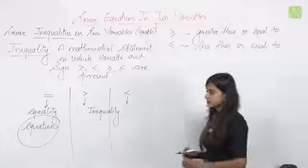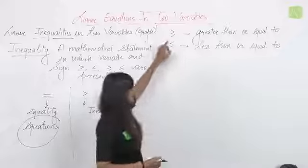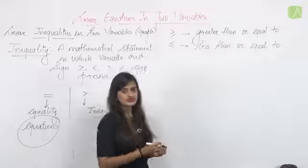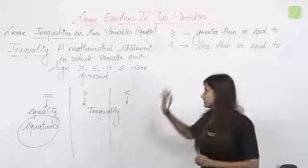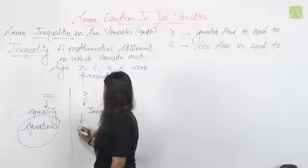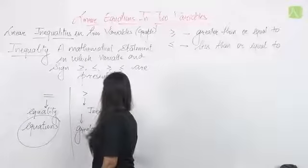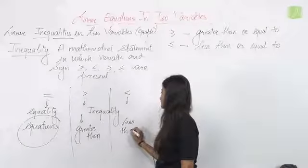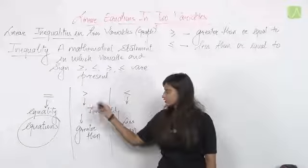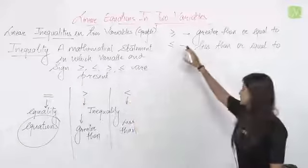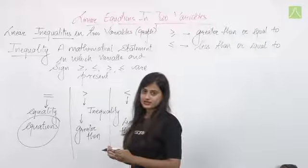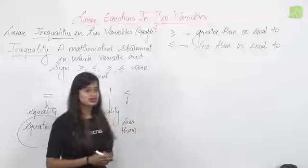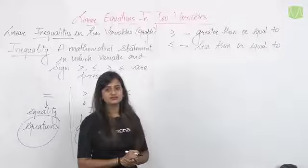If you have the greater-than-or-equal-to sign, then the two quantities being compared are either greater or equal. In the second case, they are either less or equal. Inequality uses the signs: greater than, less than, greater than or equal to, and less than or equal to. Any mathematical term separated by these signs is called a linear inequality, where linear means the degree must be one.